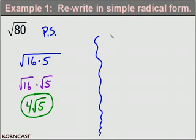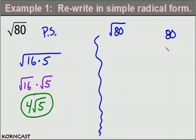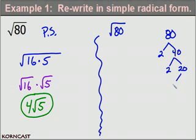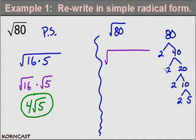The other method is the factor tree method. I take the number inside the radical, 80, and factor it using prime factorization: 2×40, 2×20, 2×10, and 2×5. So I rewrite the square root of 80 as the square root of 2 × 2 × 2 × 2 × 5.